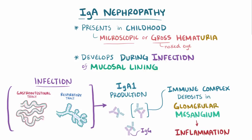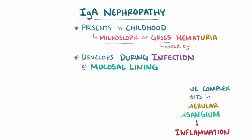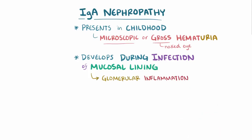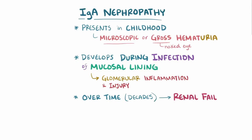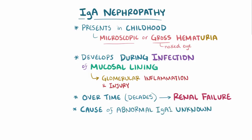With each mucosal infection, the glomeruli undergo inflammation and injury, so over time, on the scale of decades, individuals may slowly progress to renal failure. The exact reason why the abnormal IgA1 forms in the first place is unclear, but genetic factors likely play an important role.